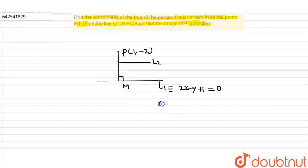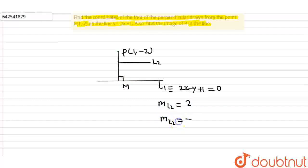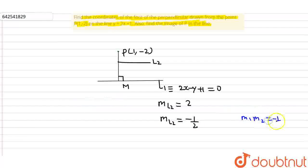So here, slope of L1 is 2. Therefore, slope of L2 is equal to minus 1 by 2. As we know, the product of slopes of two mutually perpendicular lines, M1 into M2, is equal to minus 1.